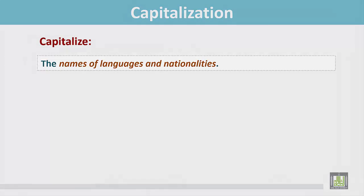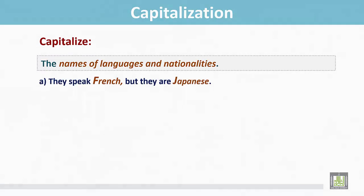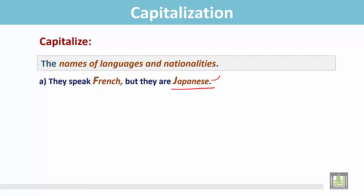Capitalize the names of languages and nationalities. They speak French but they are Japanese. The first one is the name of a language and F is capital, and Japanese is the name of a nationality and the first letter J is capital.